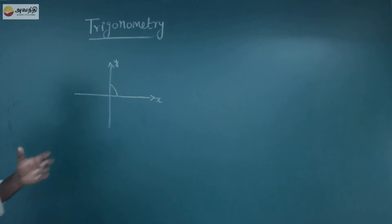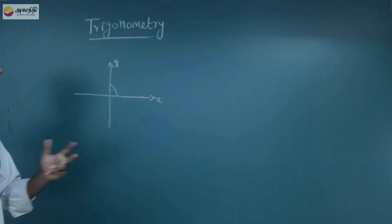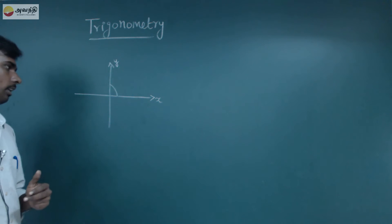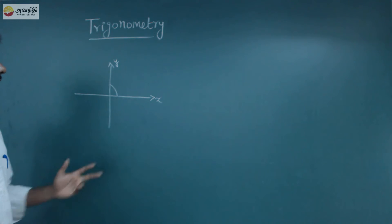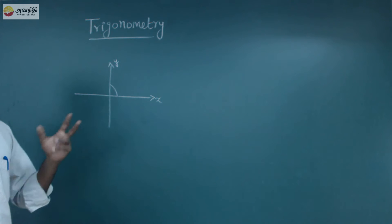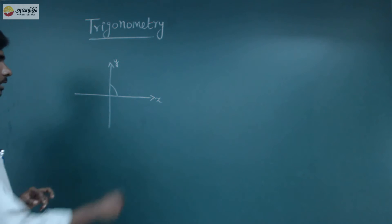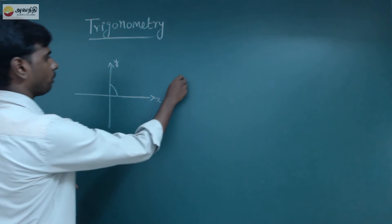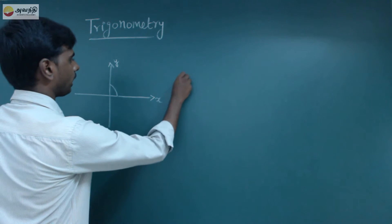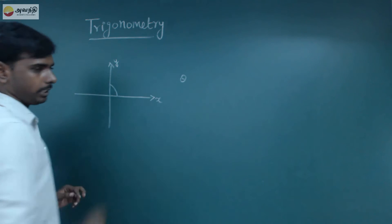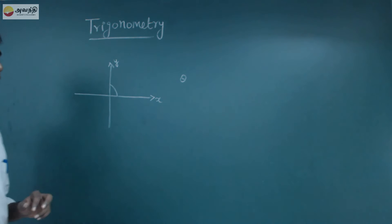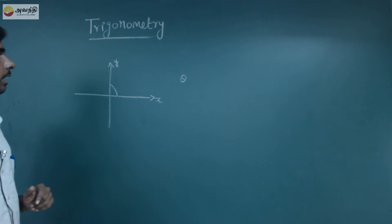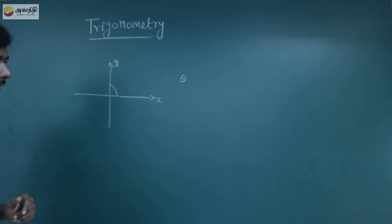What are the angles? We will learn about two types of angles. One is positive and one is negative. For a positive angle, we notate it as theta. Theta is a positive angle.